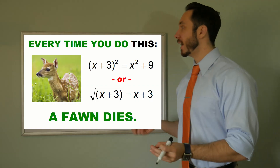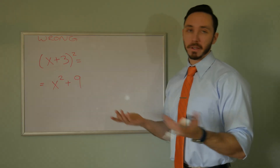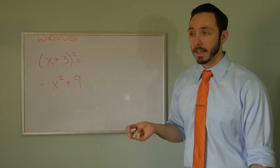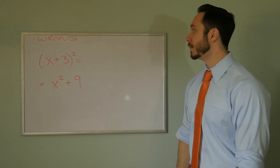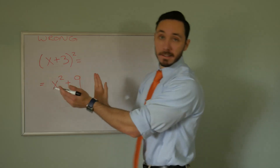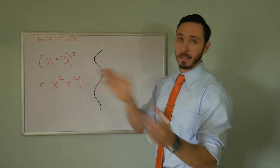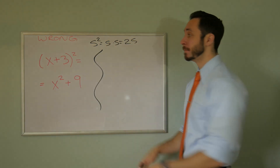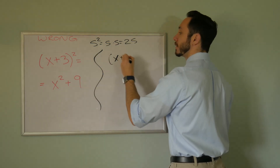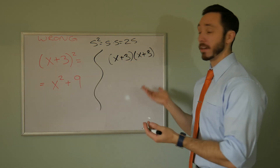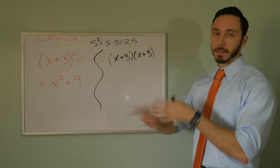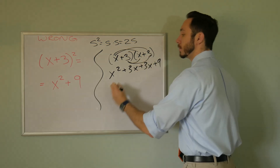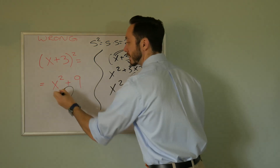I'm saving the best for last because I have a meme version of this in my classroom. Every time you do this, a fawn dies. We have the quantity x plus three, all squared, equal to x squared plus nine. This is the most common mistake in my opinion in the math classroom — they distributed the square. You can't do this. The square means you have two of these things being multiplied: x plus three times x plus three. You can use FOIL, the box method, area model, or distribution — either way, you should be getting x squared plus three x plus three x plus nine, which simplifies to x squared plus six x plus nine. We forget the six x in the process.